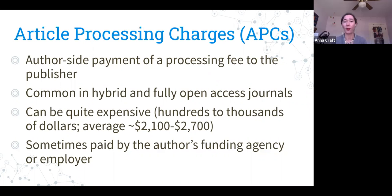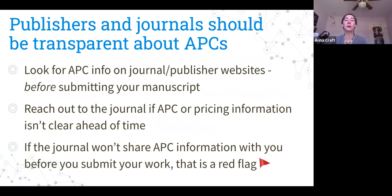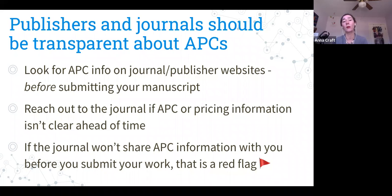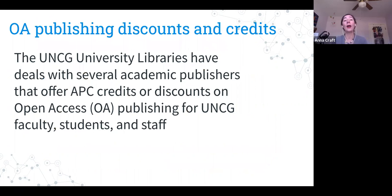There can be help with APC costs — sometimes paid through the author's funding agency or employer, and there is also funding through the library. Publishers and journals should be completely transparent about whether you are expected to pay. Look for this information before you submit your manuscript. If the journal site isn't clear or won't provide this information, you probably don't want to send your work there.